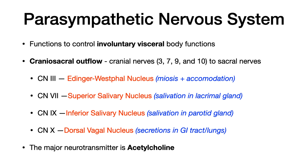You need to know the cranial nerve, the corresponding parasympathetic nuclei, and what it does. Cranial nerve III is paired with the Edinger-Westphal nucleus, which controls miosis and accommodation. Cranial nerve VII is paired with the superior salivary nucleus, which controls salivation specifically in the lacrimal gland. Cranial nerve IX is paired with the inferior salivary nucleus controlling salivation in the parotid gland. Cranial nerve X is the dorsal vagal nucleus, which controls secretions in the GI tract and lungs.